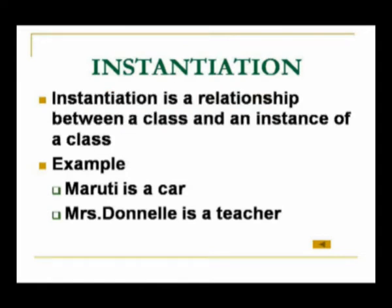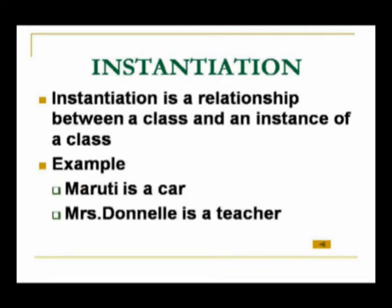For example, we have this particular object called Maruti, which belongs to the Ka class. We have a particular person identified as Donel, whose profession is teaching, and that person belongs to the class of teachers. So instantiation is assigning one particular object to belong to some type — this person belongs to the type of professionals involved in the teaching practice.